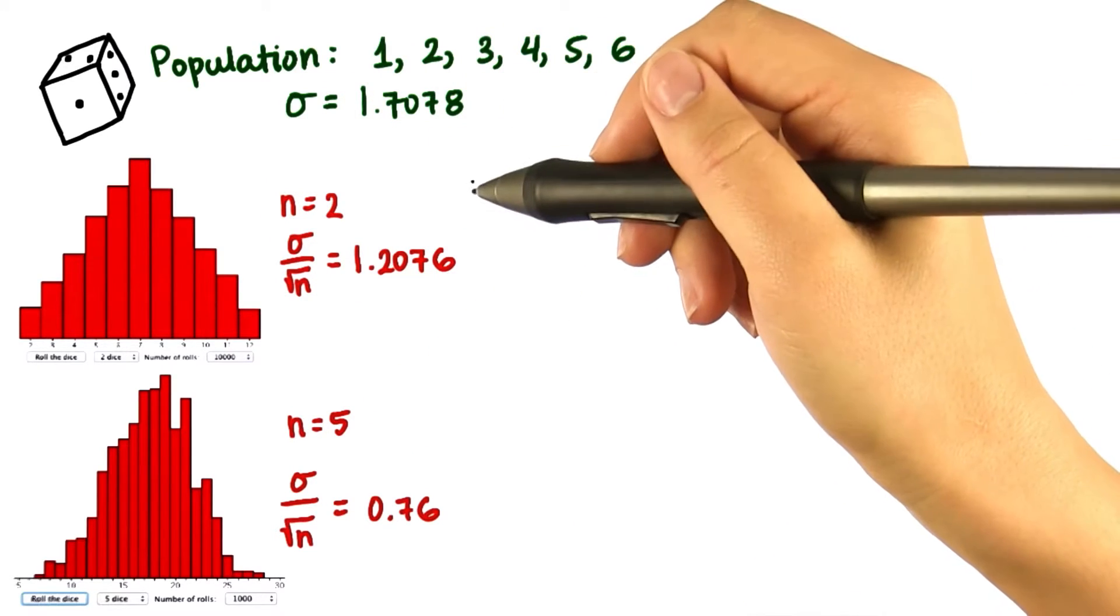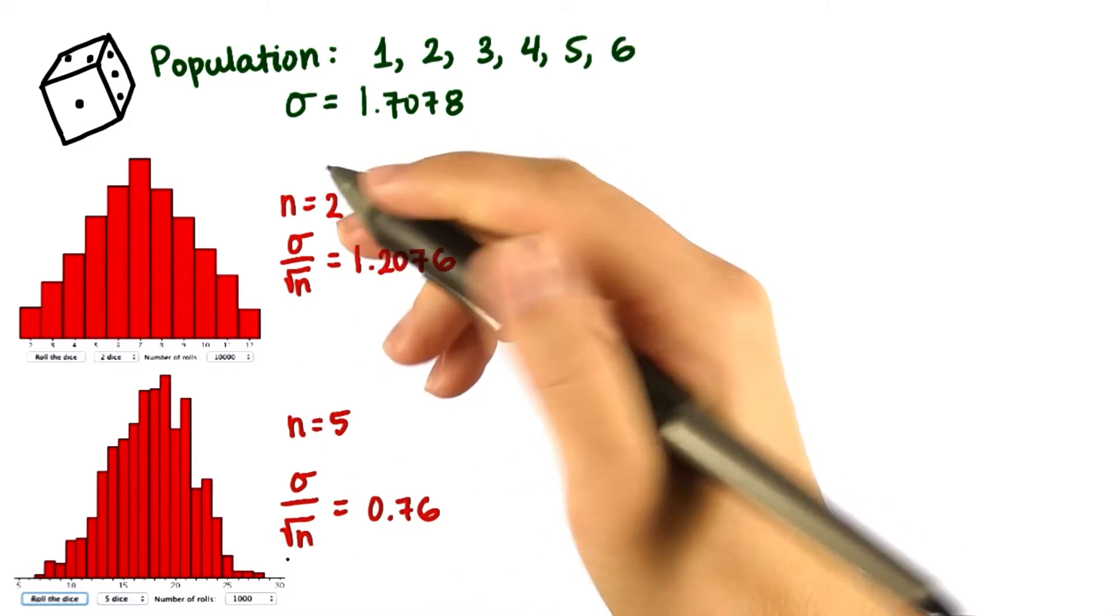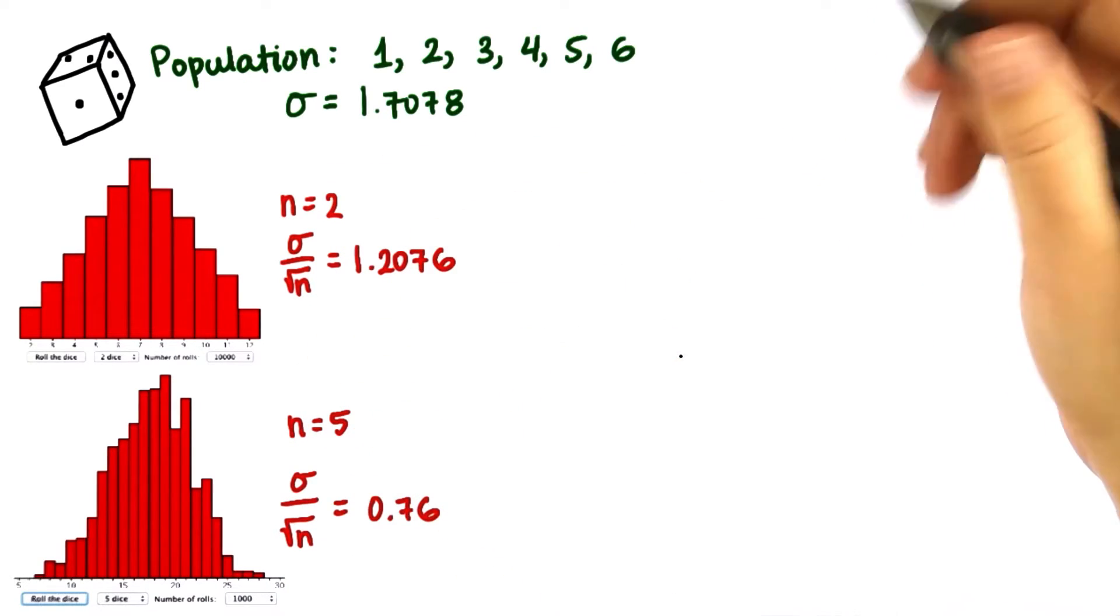So now you've experimented with the die applet, and you've seen how the sampling distribution changes when we have larger sample sizes. But try one more applet.